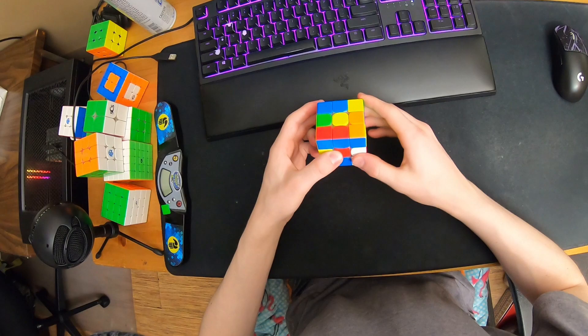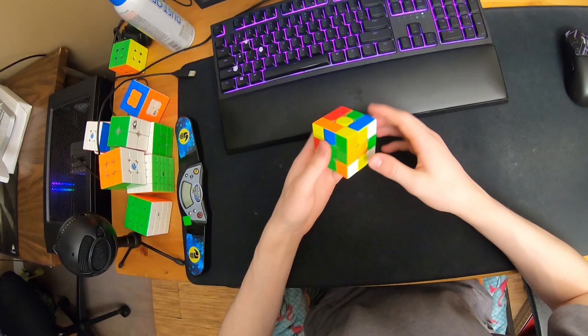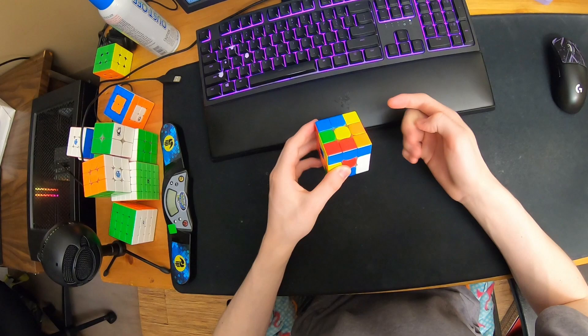All right, last solve. The scramble just looks easy. It's a three-move white cross, so I inspect the entire F2L actually, which is only possible because of this solved edge basically and that these are going to be very easy as you will see.